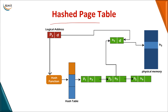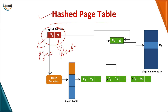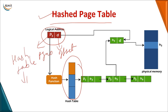The next page table structure is the hashed page table. The logical address consists of a page number and an offset. Instead of a normal table, we maintain a hash table — because hashing allows easy search. A hash function (typically using the modulus operator) is applied to the page number, and the remainder becomes the index into the hash table.